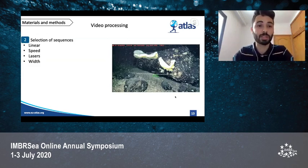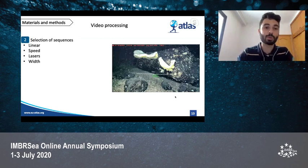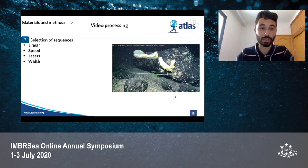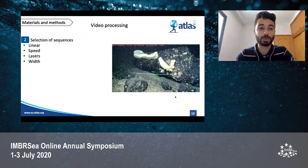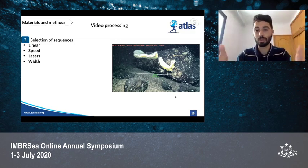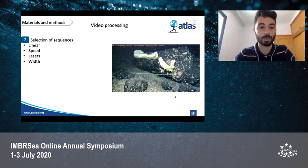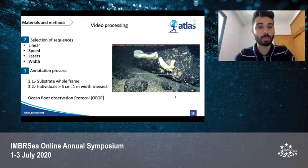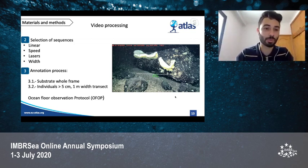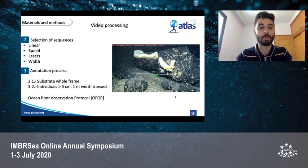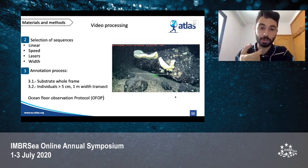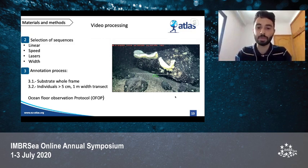The second step was selection of useful sequences — those where the ROV was traveling in a linear direction at a constant speed of 0.3 to 0.4 knots, the lasers were visible on screen, and at least one meter width was visible, which was the transect width. The third step was the annotation process, which differed for substrate and fauna. For substrate, I considered the whole frame; for fauna, only individuals bigger than five centimeters that fell inside the one-meter transect. For this, I used OFOP software.